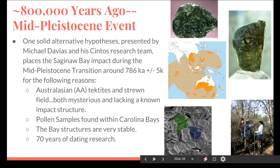A tektite, by the way, forms after an impact with enough force to throw molten rock from the surface into space, where it quickly solidifies and then falls back to earth. These AA tektites have been dated to an event that occurred around 786,000 years ago. But like the Carolina Bays, the impact site was never found or proven. Michael has determined that the likelihood of two separate Pleistocene events of this magnitude is unlikely, and the two events must be the result of the same thing — the same event.